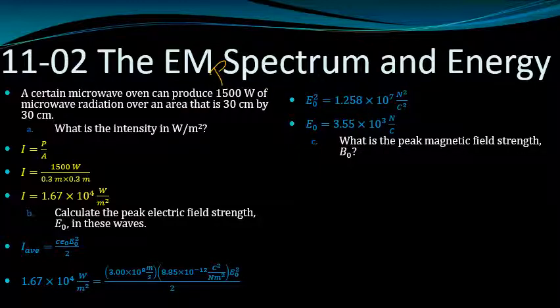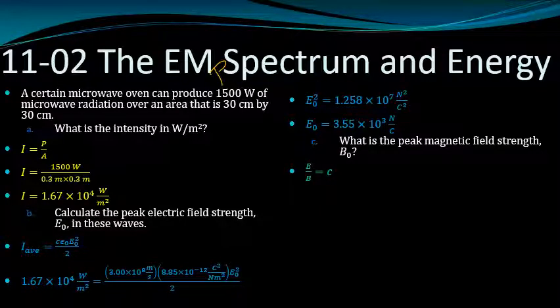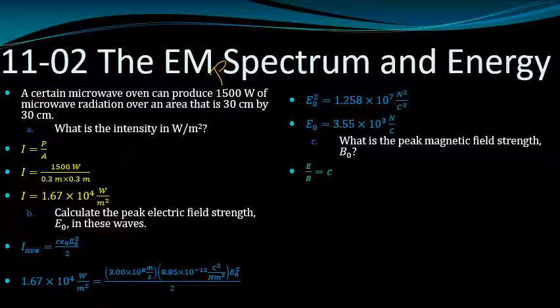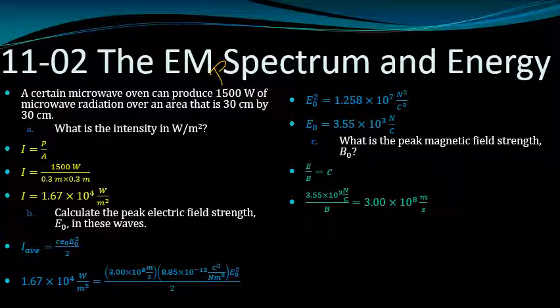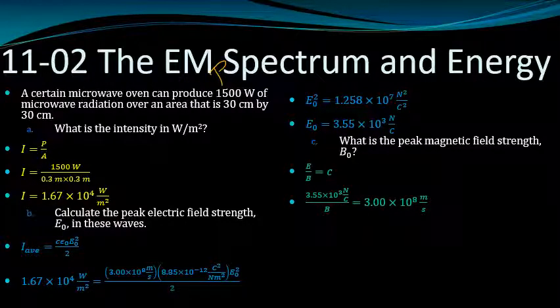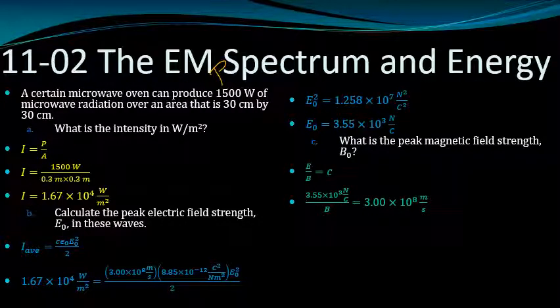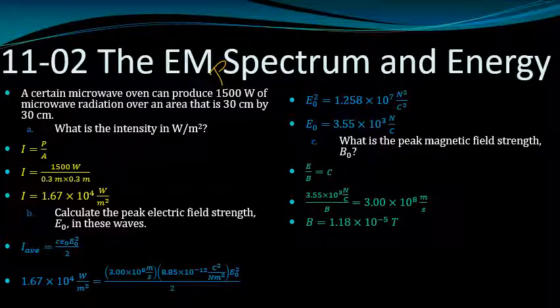How about magnetic field? We could use I average equals c B naught squared over 2 mu naught, or we could just say E divided by B equals c. I know E from part B, and the speed of light is 3 times 10 to the 8th. So divide, and you get 1.18 times 10 to the negative 5th Tesla.